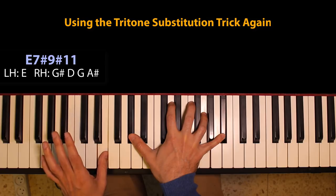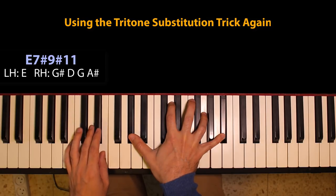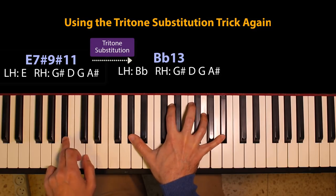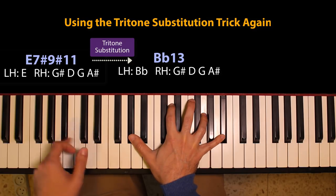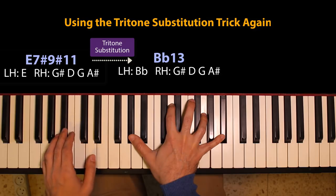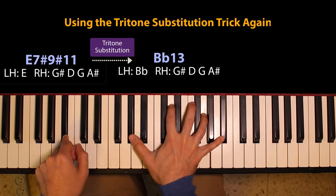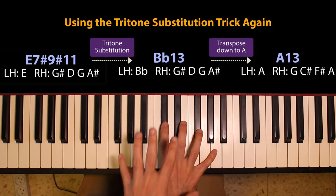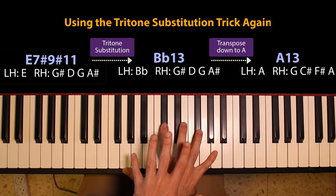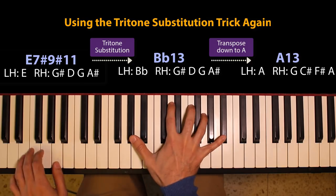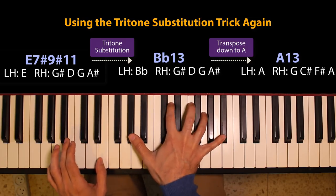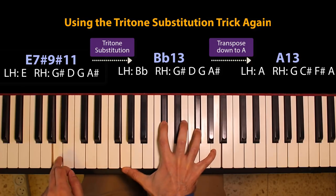Let's use this tritone substitution trick to derive the second voicing from the first. Here's my E voicing — sounds nice. Then let's take the bass down a tritone, six semitones, and I get basically another voicing or a tritone substitution for the original chord. Then let's take this down a semitone. And voilà — you get the second voicing I used. Look at the right hand: it's exactly the voicing I used for the A chord. So going from one voicing to the next was derived by doing a tritone substitution and taking it down a semitone.